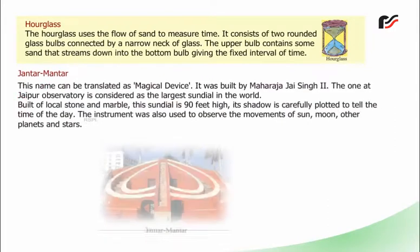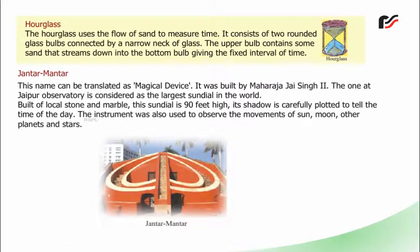Jantar Mantar: This name can be translated as 'magical device.' It was built by Maharaja Jai Singh II. The one at the Jaipur Observatory is considered the largest sundial in the world. Built of local stone and marble, this sundial is 90 feet high. Its shadow is carefully plotted to tell the time of day. The instrument was also used to observe the movements of the sun, moon, other planets and stars.